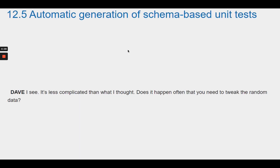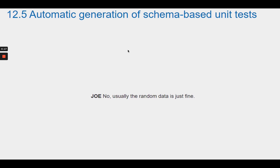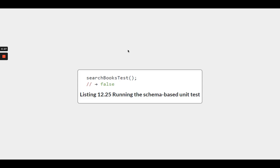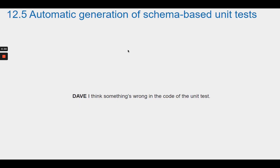Dave says it's less complicated than he thought, and asks if it often requires tweaking the random data. Joe says no, usually the random data is just fine. Dave runs the unit test and it fails. His expression is one of bewilderment. Dave thinks something is wrong with the unit test, but Theo suggests that the unit test may have caught a bug in the implementation of catalog.searchBooksByTitle.